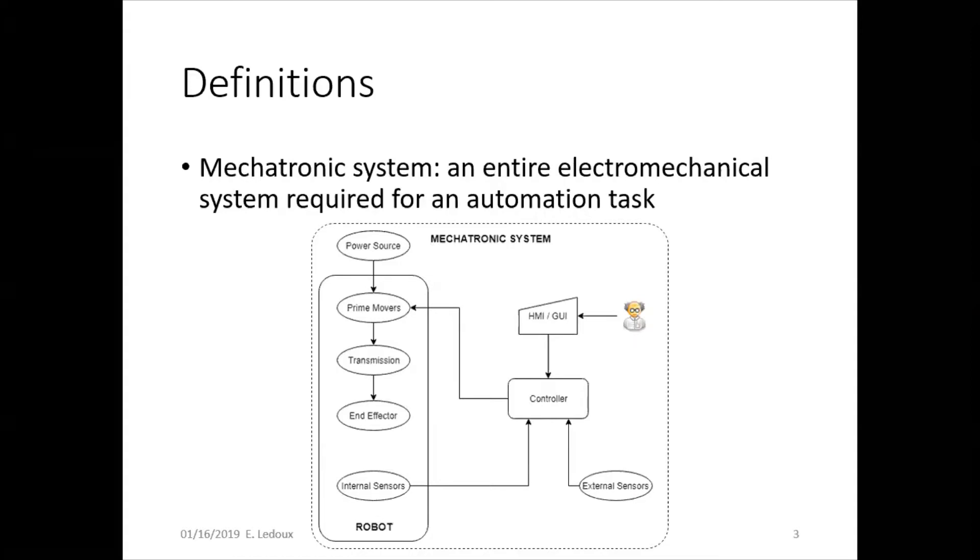Now the mechatronic system is the whole electromechanical system required to do the automation task. There's some power source, goes to the actuator through a transmission, which is all the joints of the robot, to the end effector. The end effector is the claw.